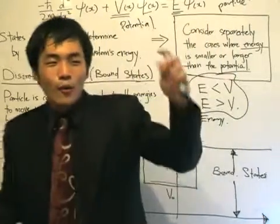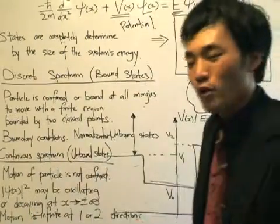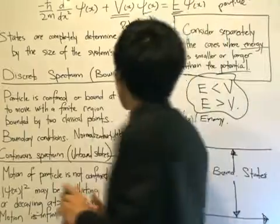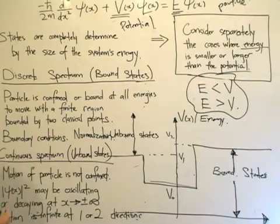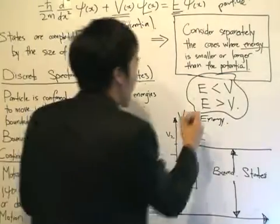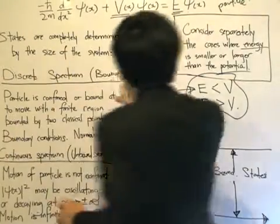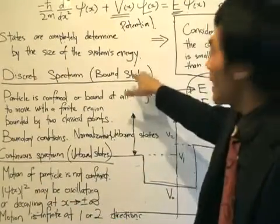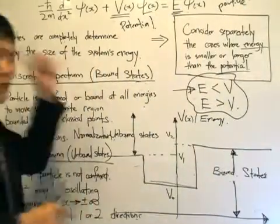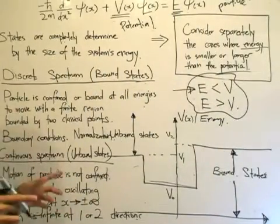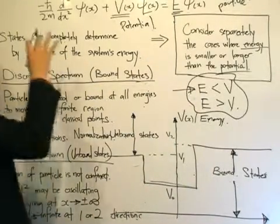So we want to look at when the energy is less than the potential or when the energy is more than the potential. Let's look at the first case: the energy is less than the potential. When this occurs, what we have is known as a bound state. And when this occurs, we know for sure that the energy values of the particle are going to be discrete — we have a discrete energy spectrum.